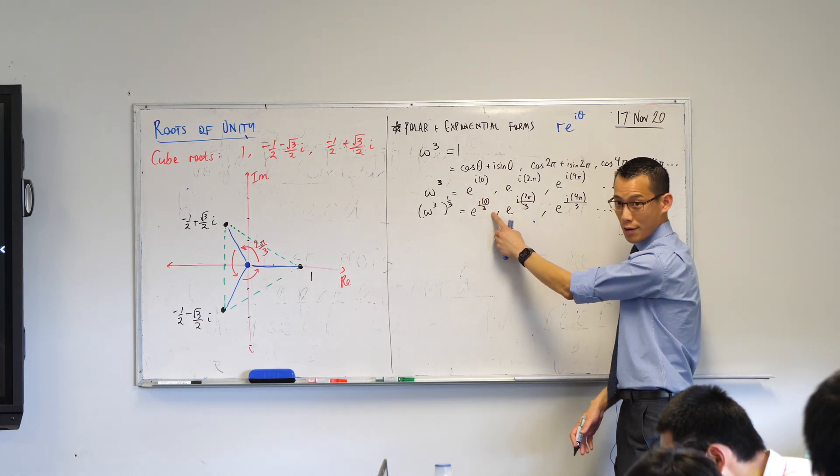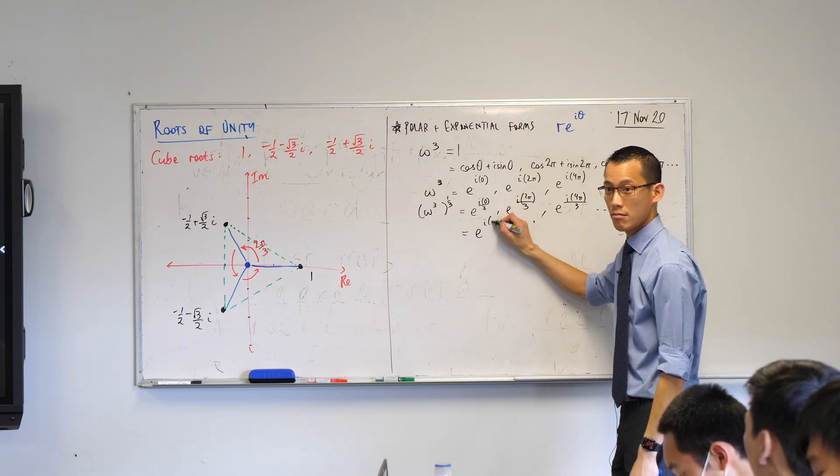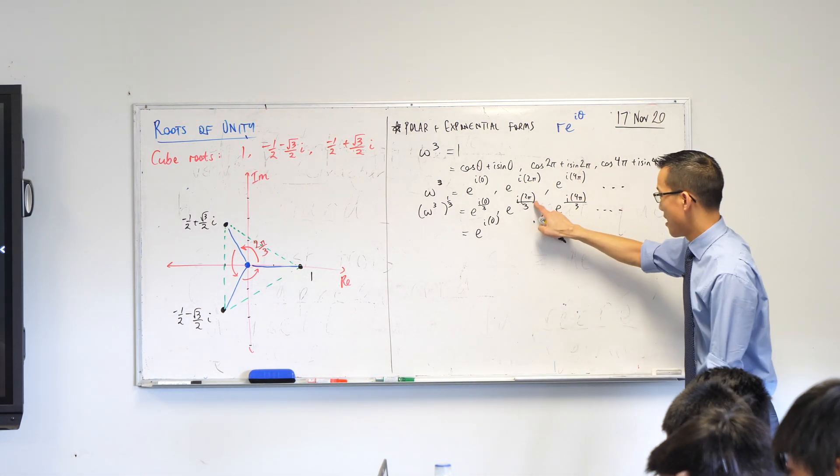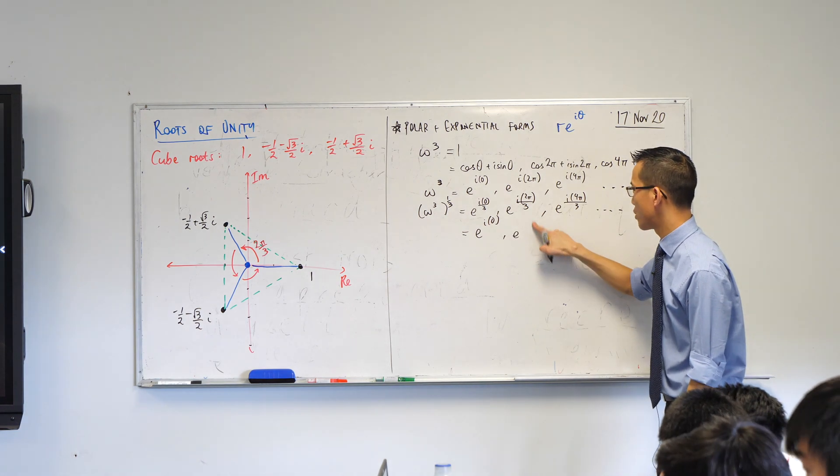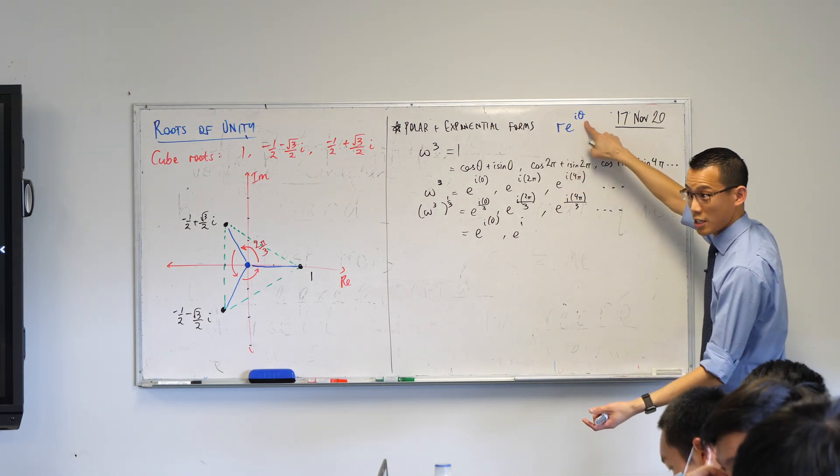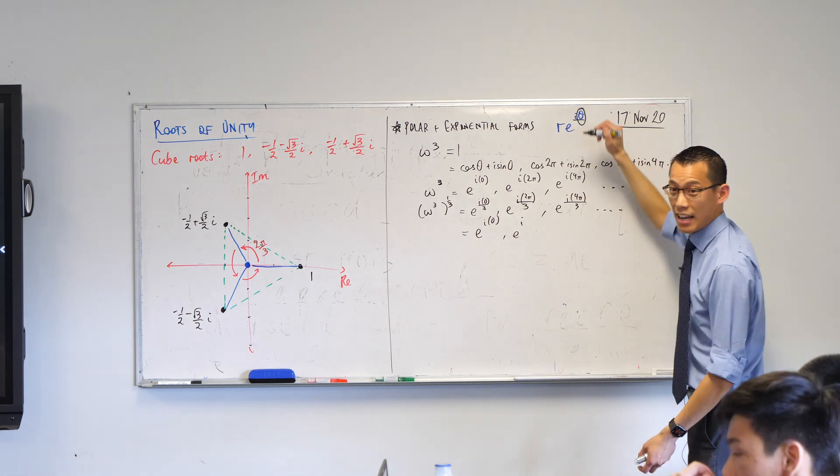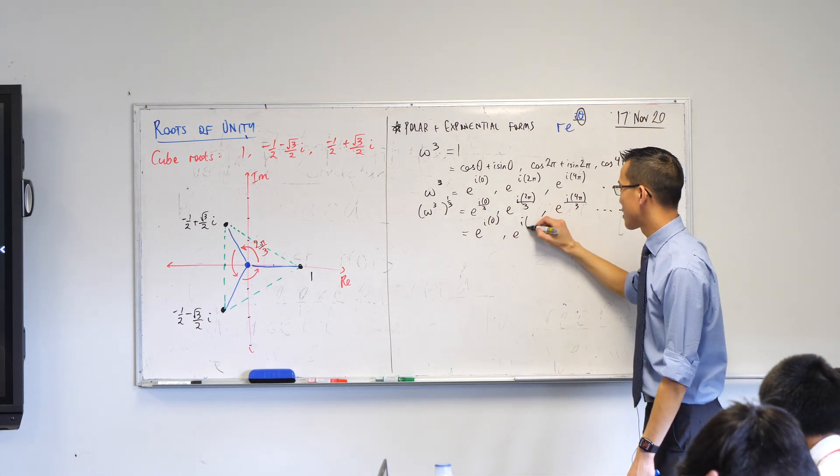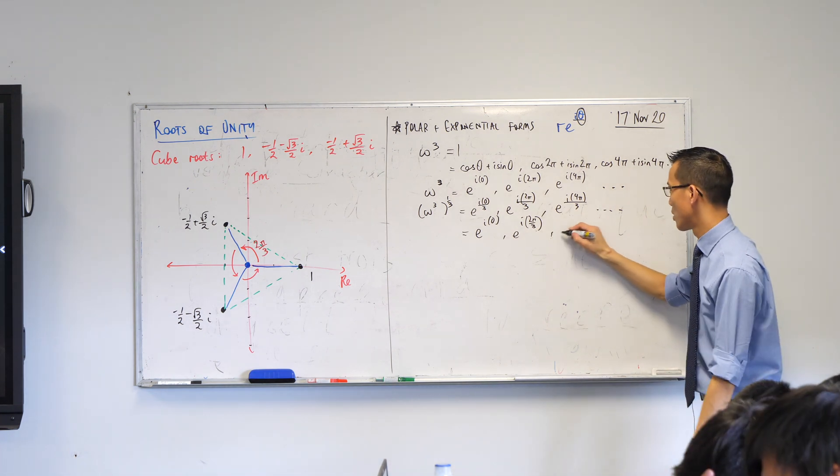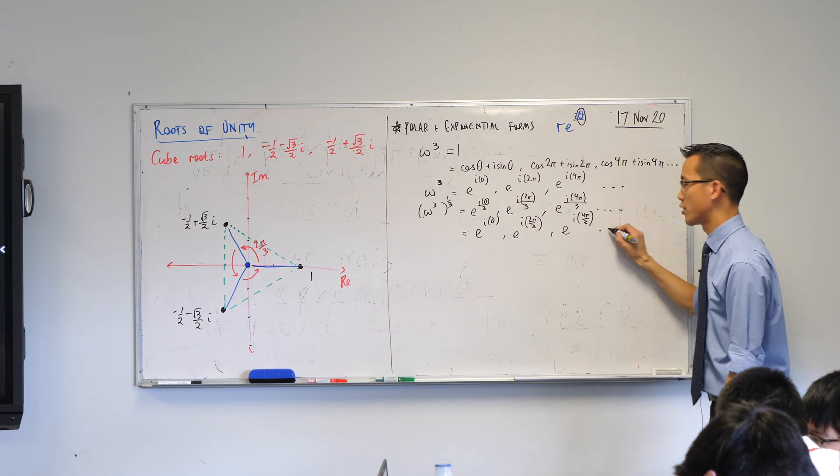This e to the 0 on 3 is really still e to the i 0, because 0 divided by 3 is still 0. This, I'm going to write as e to the i, and I'm just going to isolate that angle in there, because that's the way we write it in exponential form, not the whole thing divided by some number. So that's i times 2 pi on 3. Last one along, 4 pi on 3, dot dot dot.